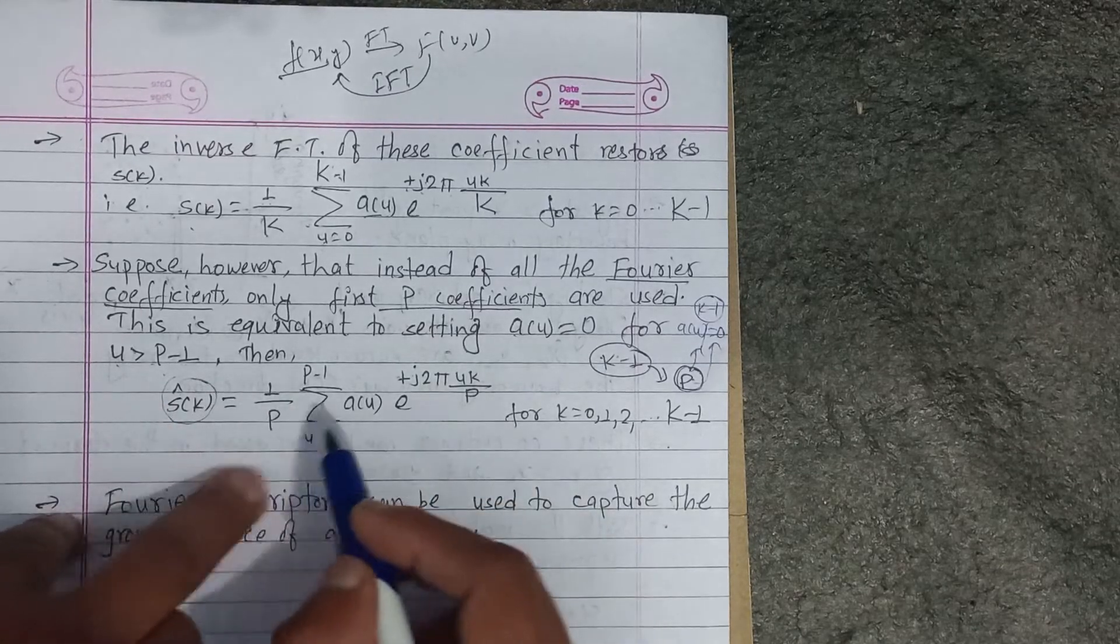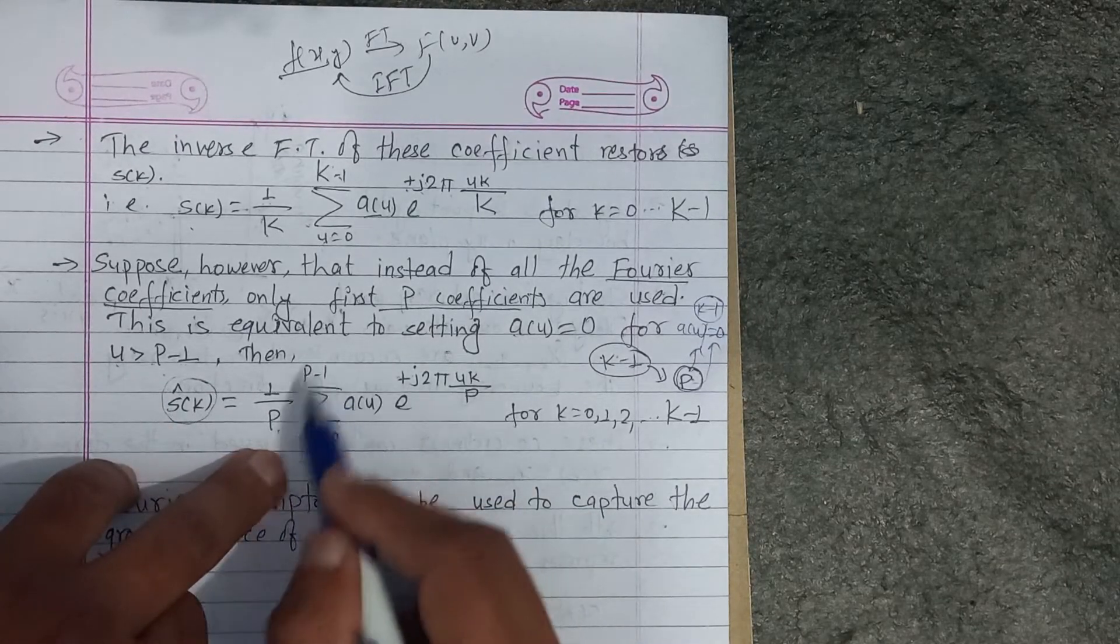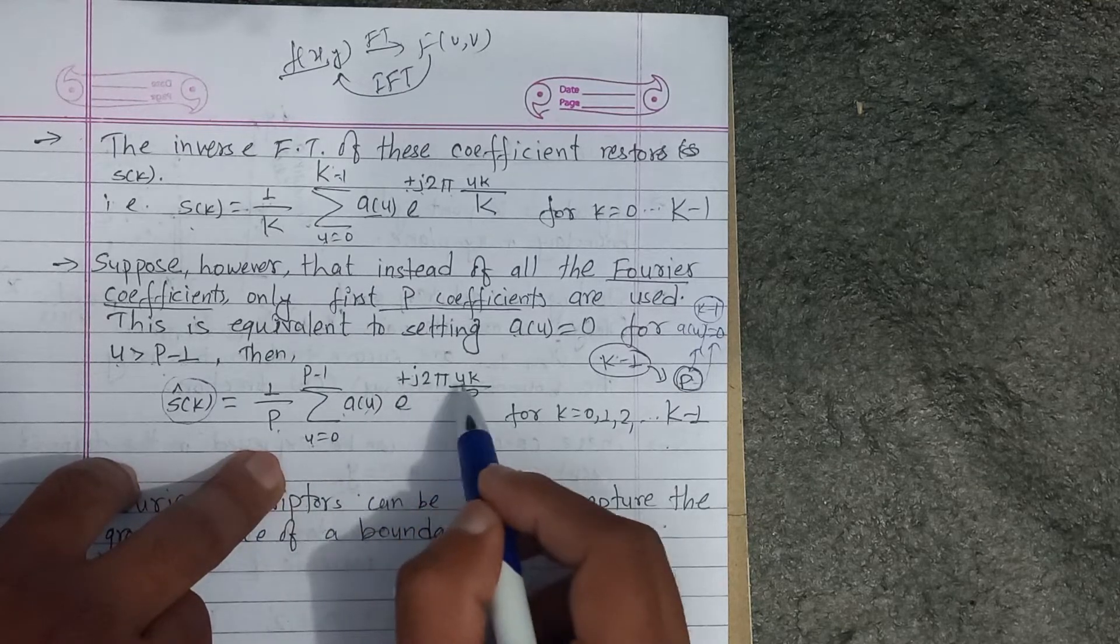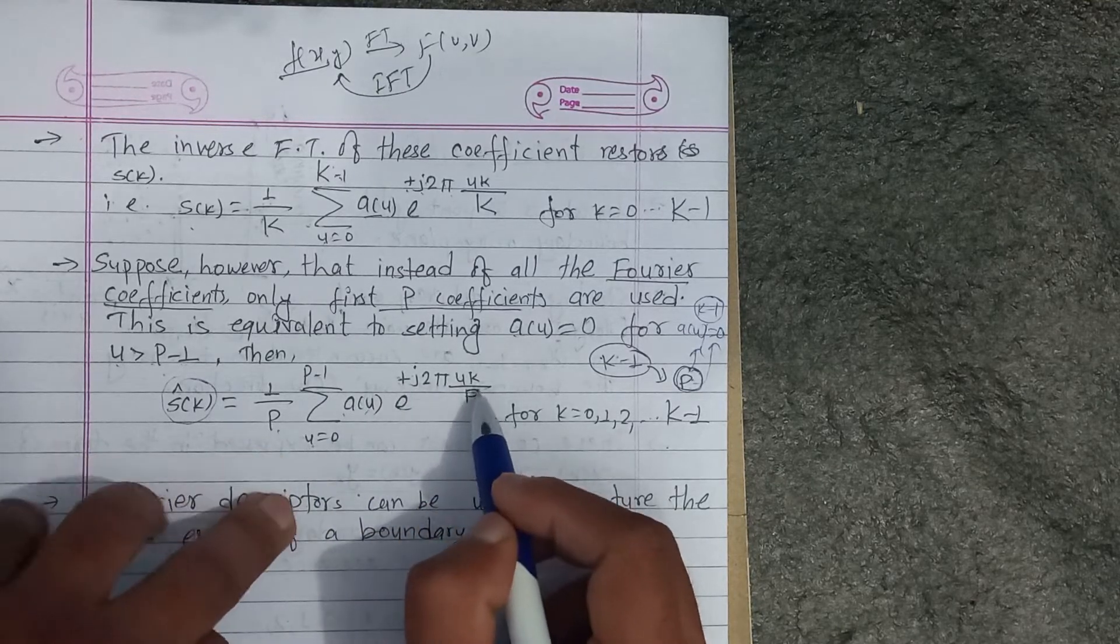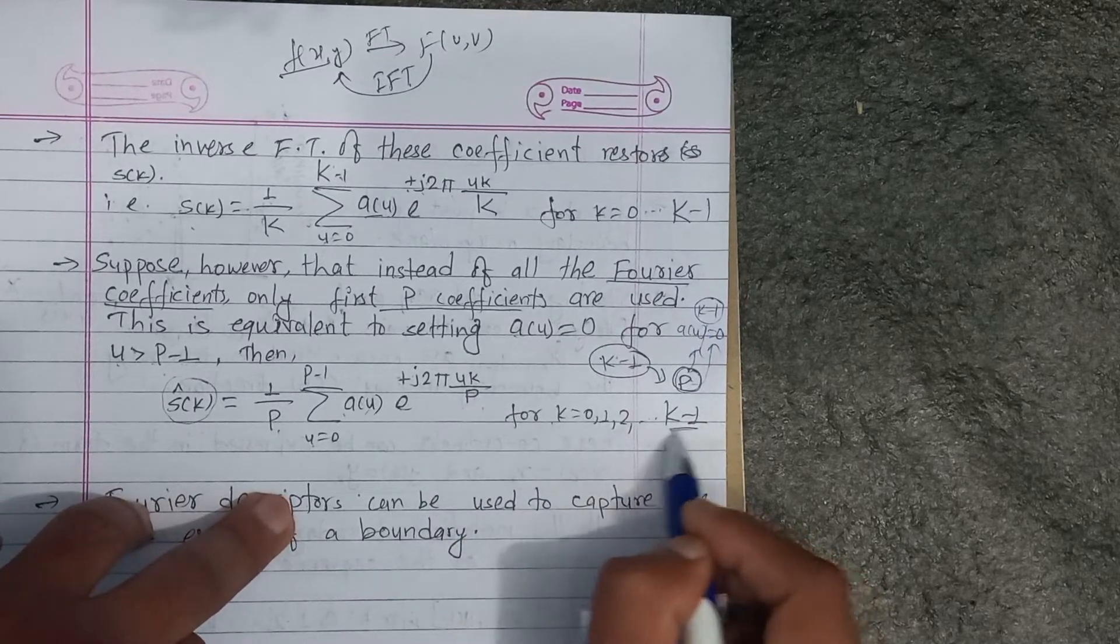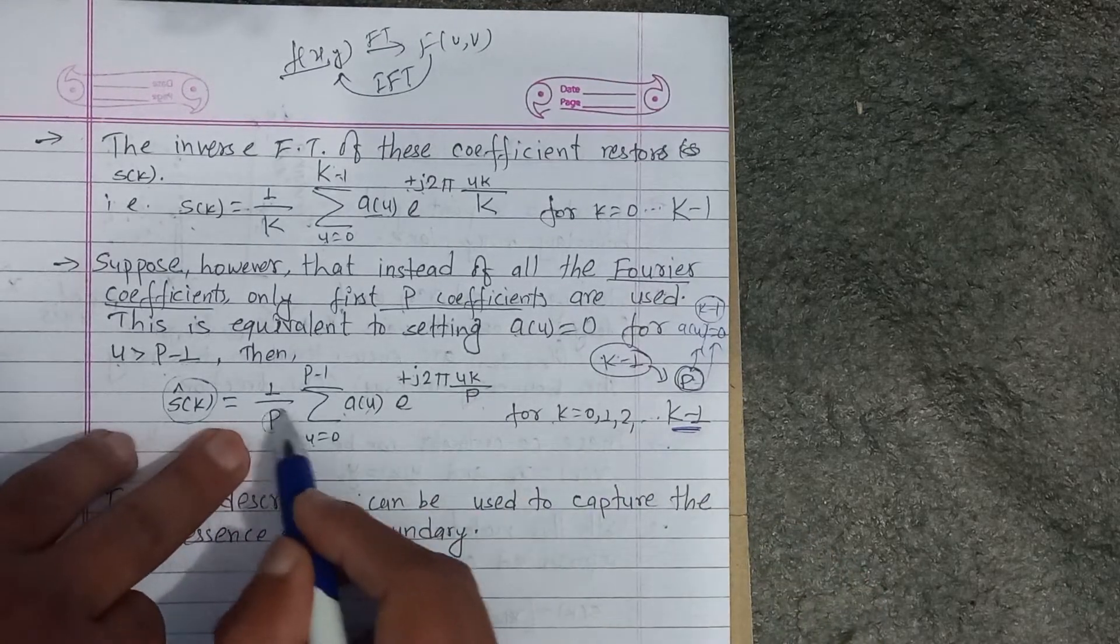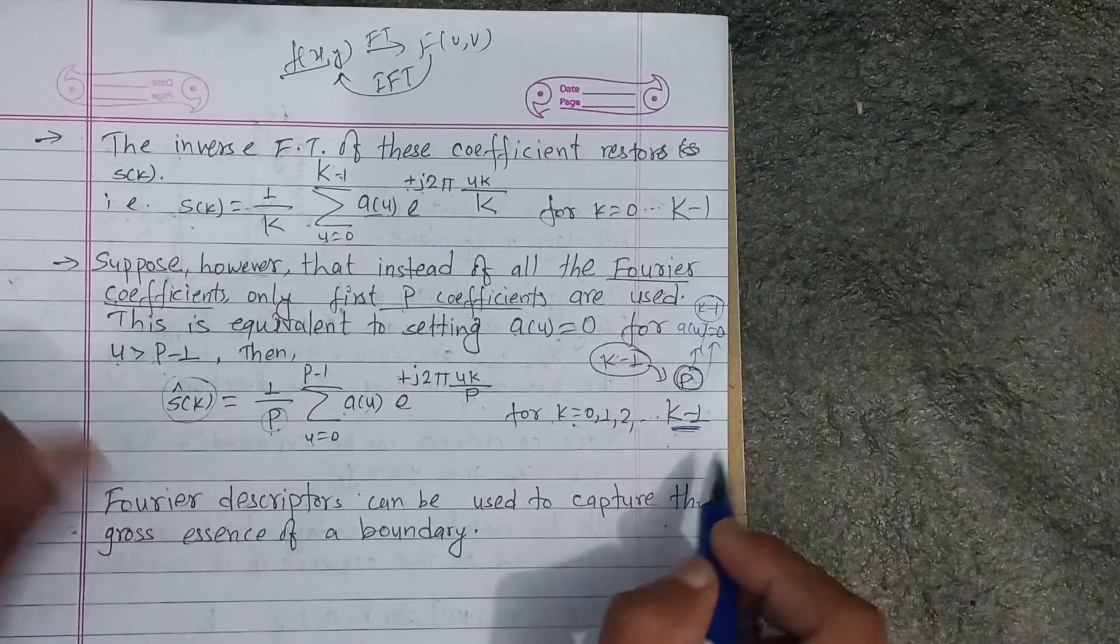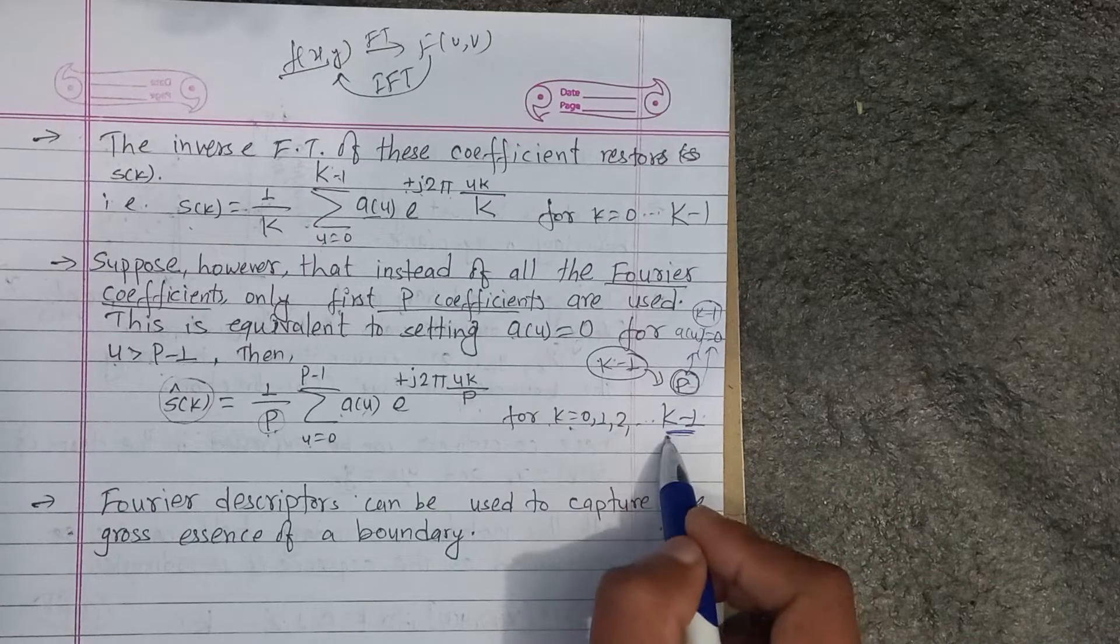The formula becomes s(k) equals to sum over u equals 0 to p minus 1 of a(u) times e to the power plus j 2pi u k by k, where k ranges from 0 to k minus 1, and we define p points instead of k points.